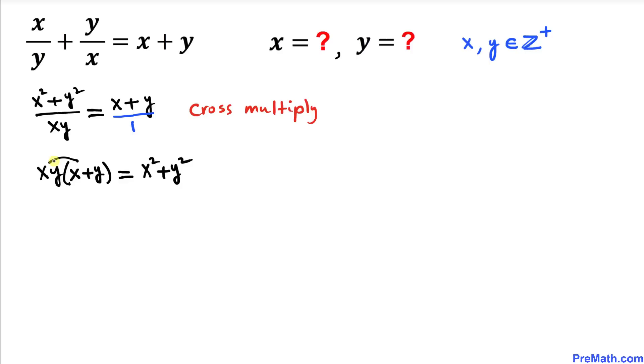Now let's distribute these terms. So this is going to give us x squared y plus xy squared equals x squared plus y squared.